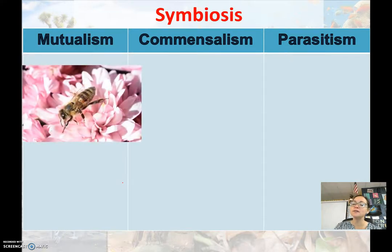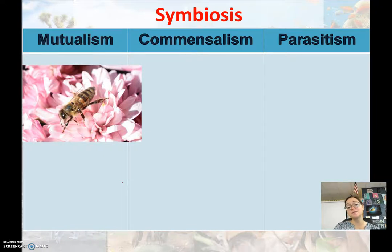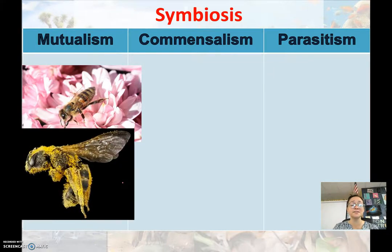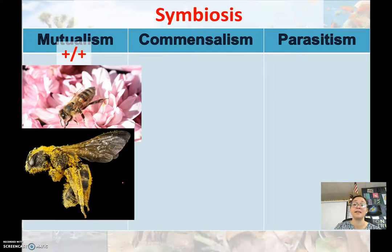In mutualism, both species living closely together benefit from the relationship. Flowers benefit from bees or pollinators because their pollen — essentially plant sperm — gets spread, while the insect benefits because it gets nectar or food. Here's a bee covered in pollen; the flowers will be fertilized. This is a win-win relationship in nature.